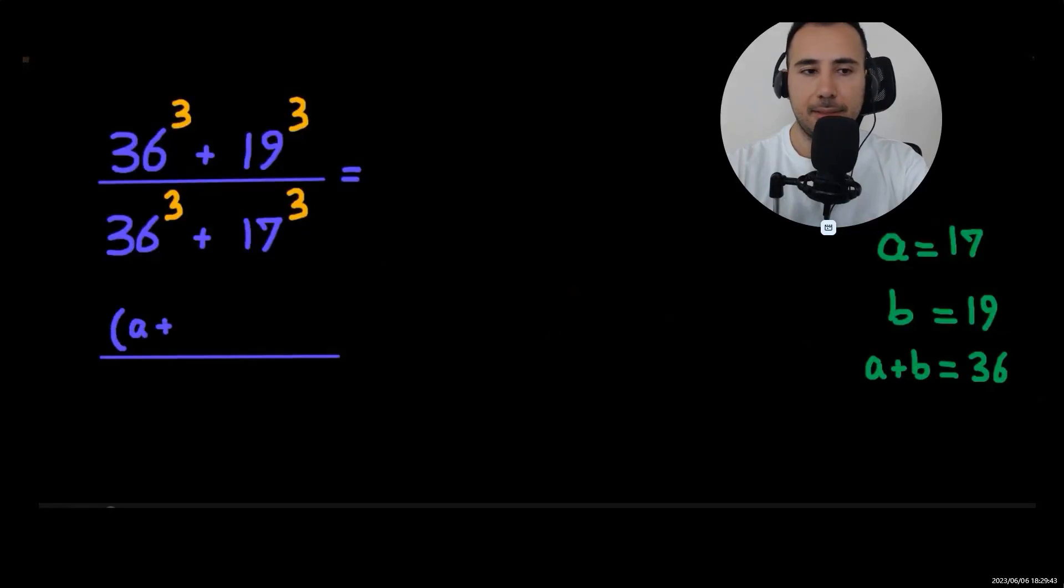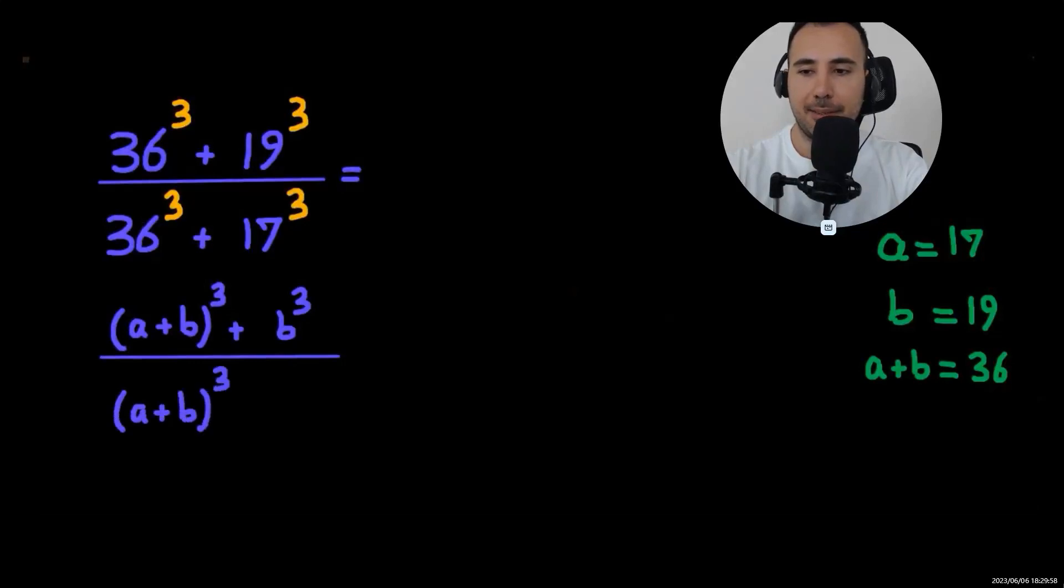So let's replace the values by a plus b. This is going to be (a+b) cubed plus b cubed over (a+b) cubed plus a cubed.